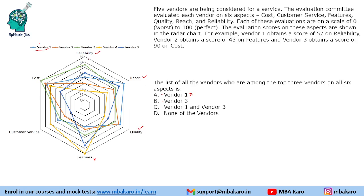Now checking vendor three — the green one: in reliability it is in the top three; in reach it is in third position; in quality also third; in features also third; in customer service also third; in cost it is first. Vendor three is present in the top three in all six aspects. That is the solution to the set.